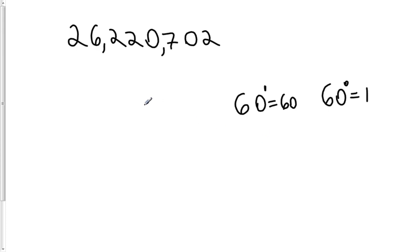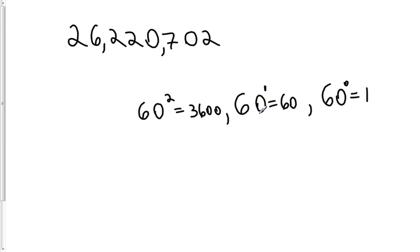The next place value is actually the 60 squared place, or the 3600 place. And we continue like this until we find the place value. We want to find the largest place value that is still less than our number. The number we have is 26,220,702, so we need to keep going until we find the largest place value that is still smaller than that number.